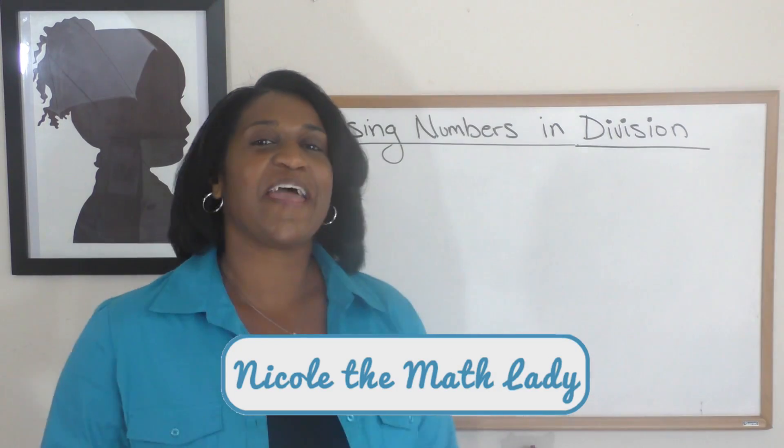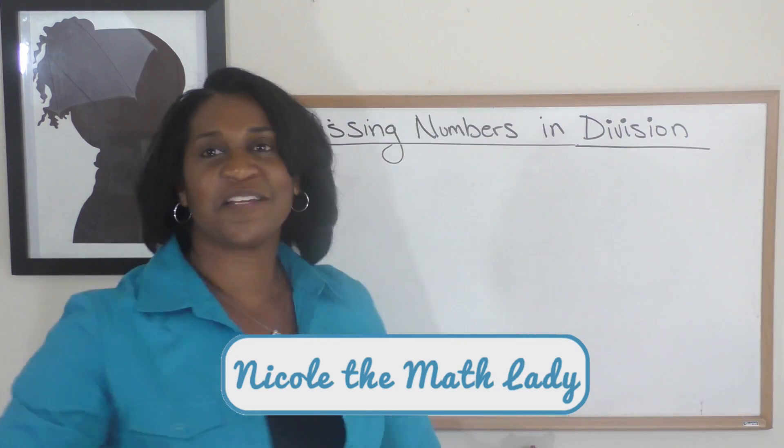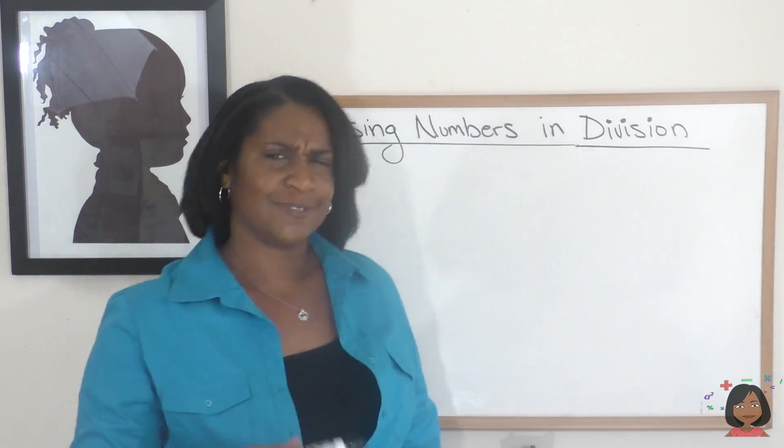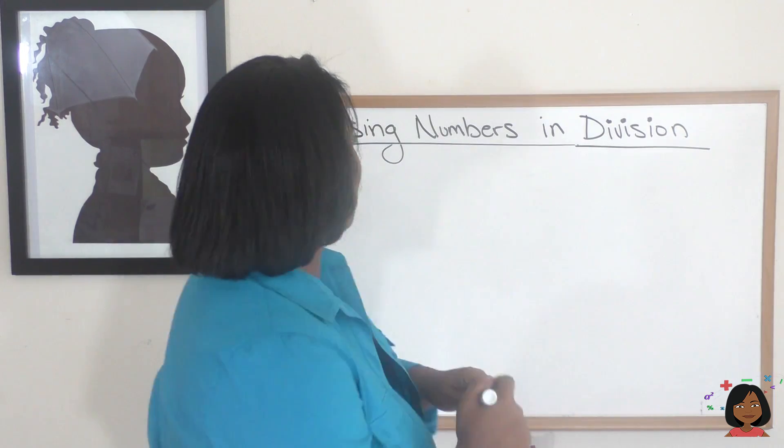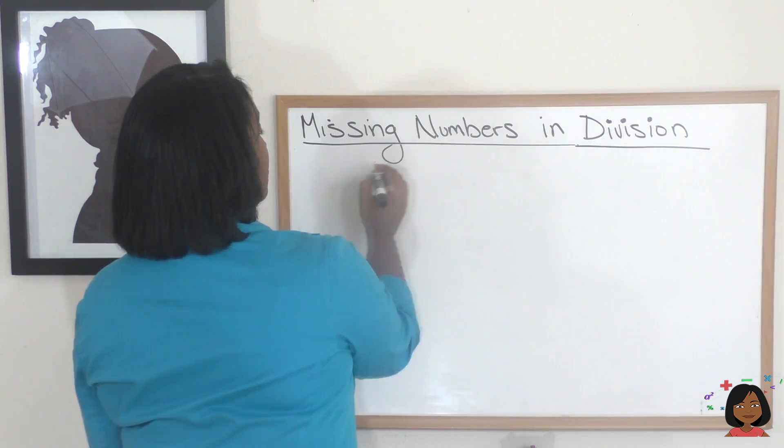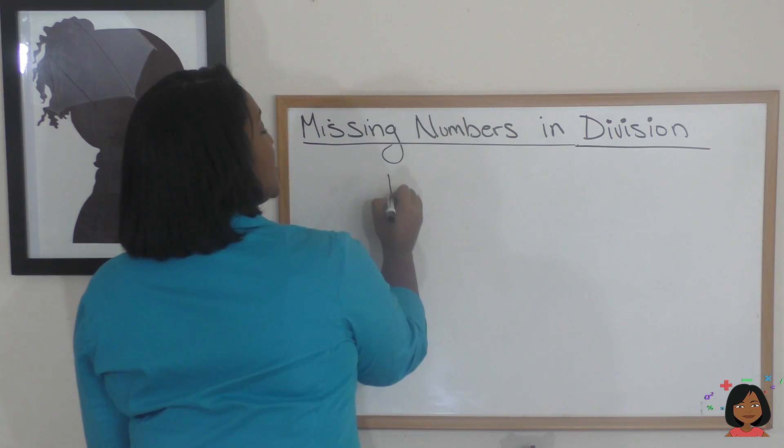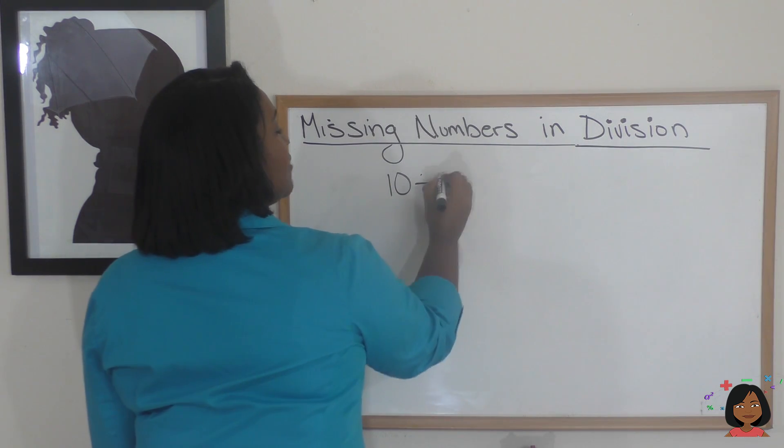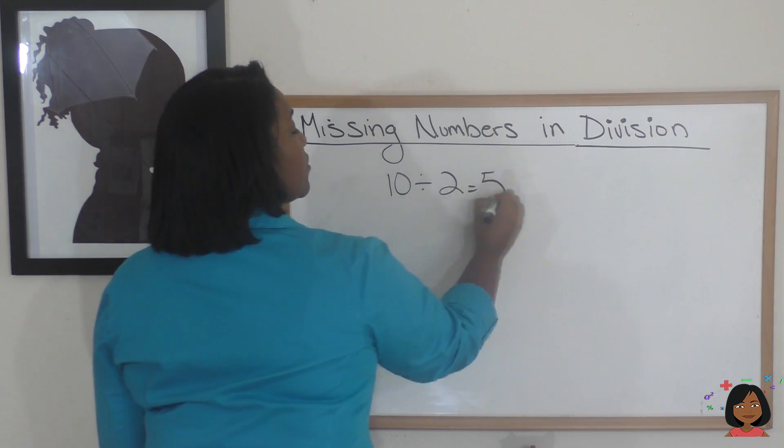Hi, it's Nicole the Math Lady, and we're here to find missing numbers in division. So how do we do that? Well, let's take a look. Let's say we have the number 10 divided by 2 equals 5.